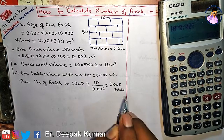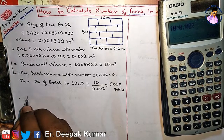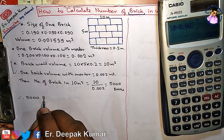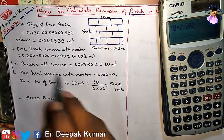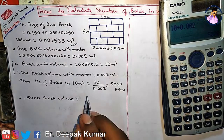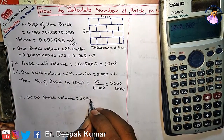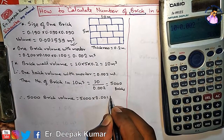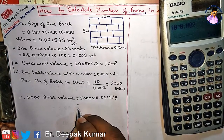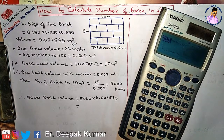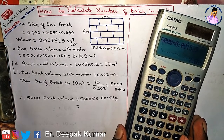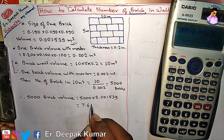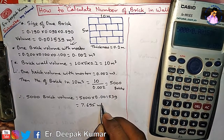We know that one brick volume (without mortar) is 0.001539 m³. So 5000 bricks × 0.001539 gives us 7.695 cubic meter — this is the total volume of bricks only.